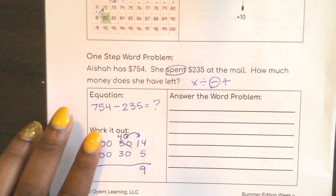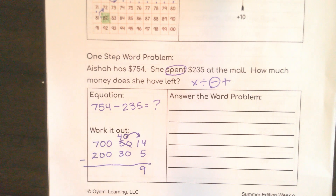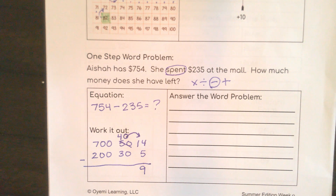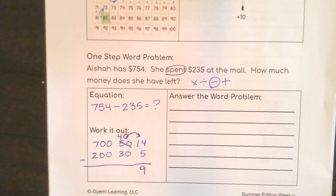Would you like to do 40 minus 30? Can I do 40 minus 30? If I have 40 pieces of cake and 30 guests, can I give everyone a piece? I can — everybody can get a piece, but I'll have some pieces left over, and that would be 10.